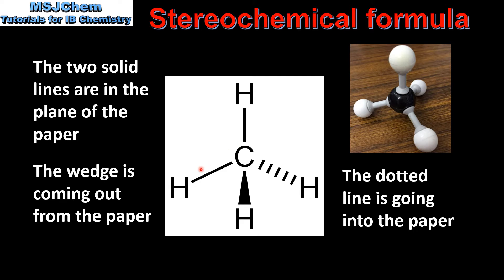The two solid lines are in the plane of the paper. The wedge is coming out from the paper and the dotted line is going into the paper.